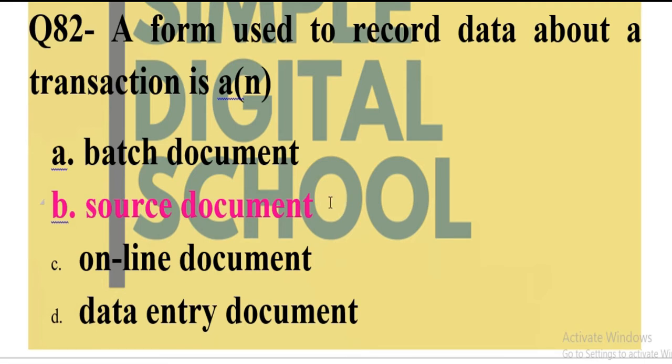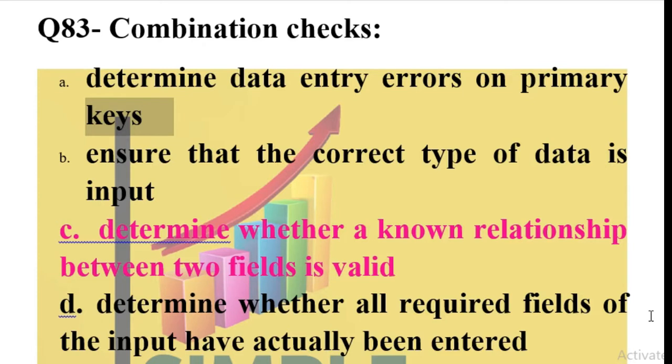Question number 83: Combination checks determine data entry errors on the primary keys, ensure that the correct type of data is input, determine whether a known relationship between two fields is valid, or determine whether all required fields of the input have actually been entered. Here we are talking about the database part of Management Information Systems.